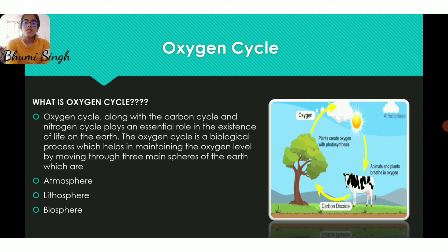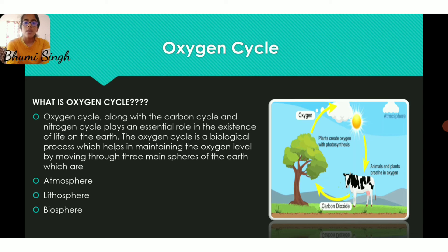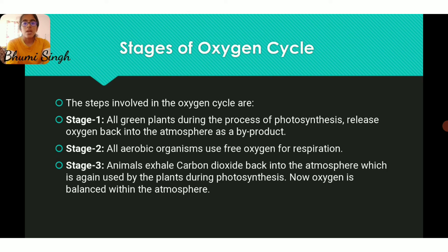Now oxygen cycle. What is oxygen cycle? Oxygen cycle, along with carbon cycle and nitrogen cycle, plays an important role in the existence of life. It involves the movement of oxygen between spheres of the earth, which are atmosphere, lithosphere, and biosphere. The stages which the oxygen cycle passes through are: plants during the process of photosynthesis release oxygen into the atmosphere, and then all living organisms use that oxygen.